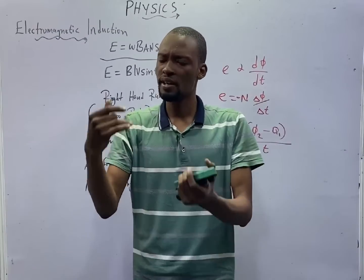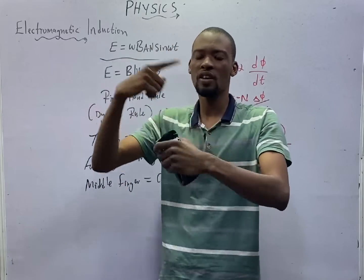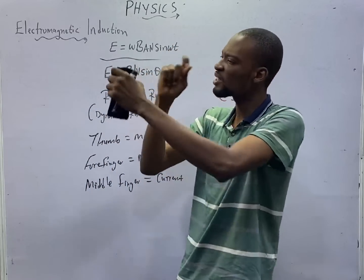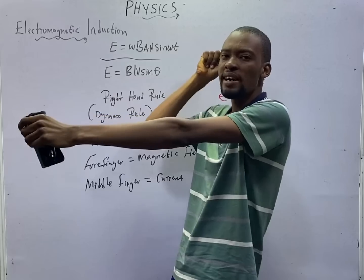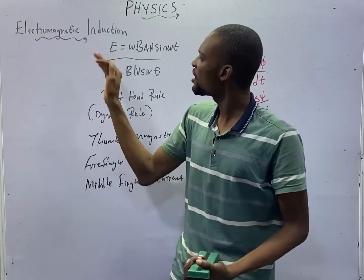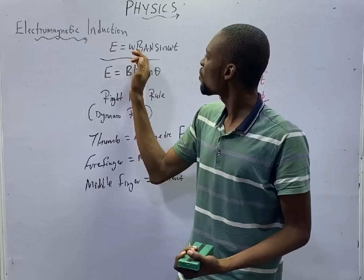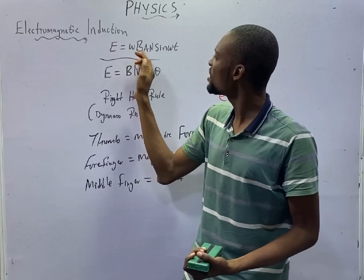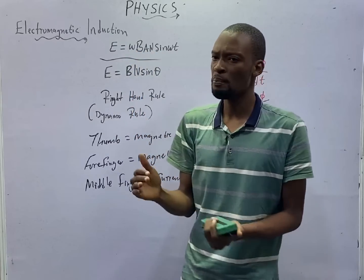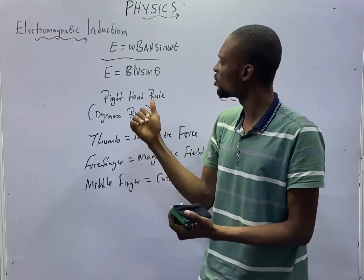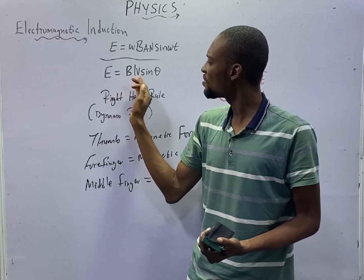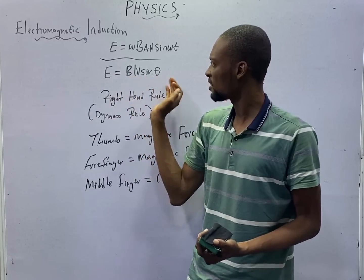EMF can be induced in a coil or in a straight line conductor — just a single straight line wire. For a coil, the induced EMF is E = BAN sinωt. Meanwhile, for a straight line conductor, it is E = BLV sinθ.